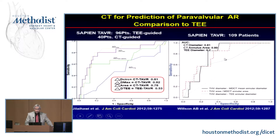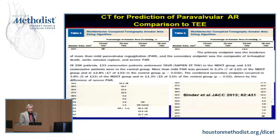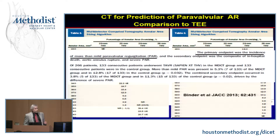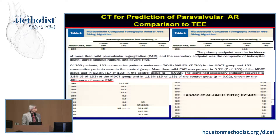There are several studies in the literature showing that CT outperforms transthoracic echo in terms of avoiding paravalvular leaks. A more recent trial by Binder in 2013 used an algorithm based on CT area to determine which valve to implant versus routine echocardiographic considerations. The rate of more than mild paravalvular regurgitation was 5.3% in the CT-guided arm versus 13% in the control group, with better outcomes in the CT-guided arm.